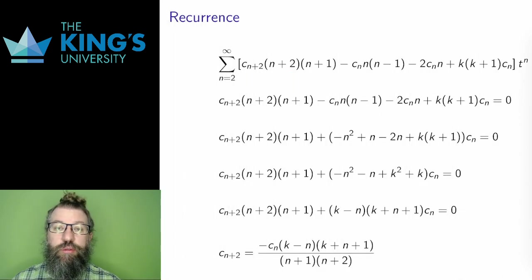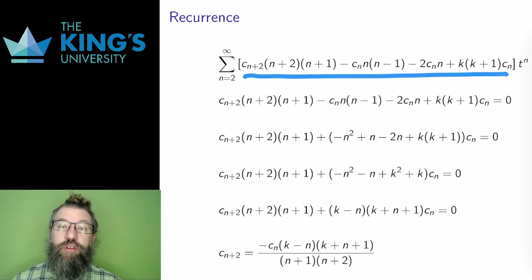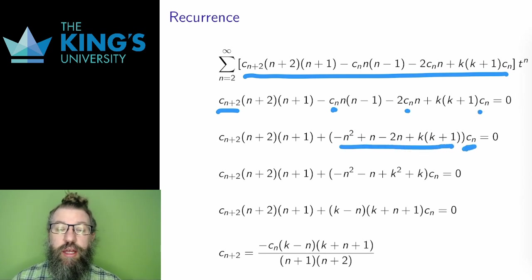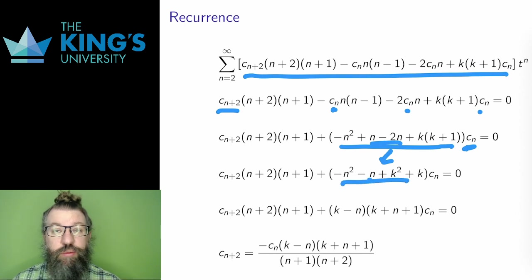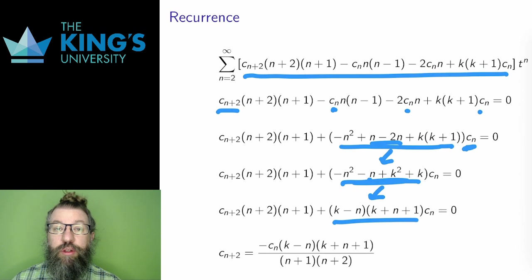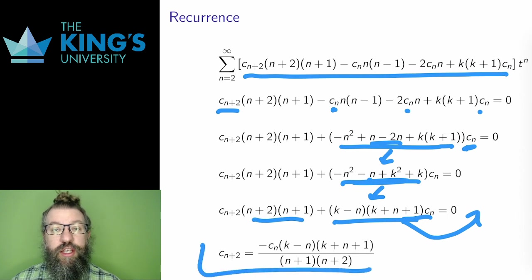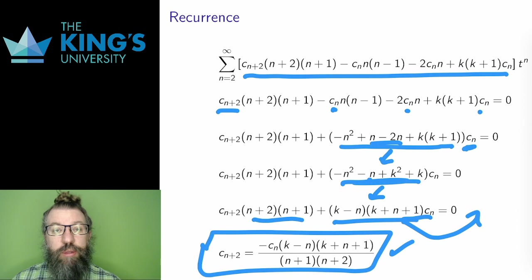Then I look at the general terms. I solve for cn plus 2, and I do this by factoring out cn from these three terms. Then I work with the expression in front of cn a bit, canceling n minus 2n to get minus n. And finally, I can actually factor this, which isn't at all obvious. It factors into k minus n times k plus n plus 1. Then I take this to the right and divide by n plus 2 times n plus 1 to get an expression for cn plus 2. This is the recurrence relation. It's a bit more complicated than before, but it's still something to work with.